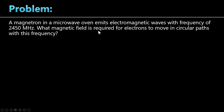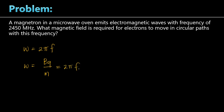To solve this, we relate the frequency to angular frequency. The angular frequency omega equals 2 pi F. We also know omega equals BQ over M. Equating these: 2 pi F equals BQ over M, so B equals 2 pi F M over Q. Substituting: 2 pi times 2450 times 10 to the 6, times electron mass (constant 03), divided by electron charge (constant 23).